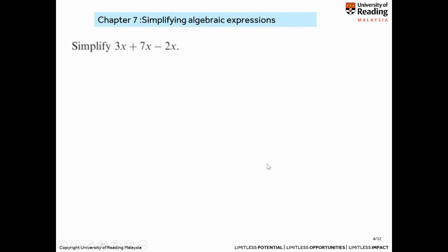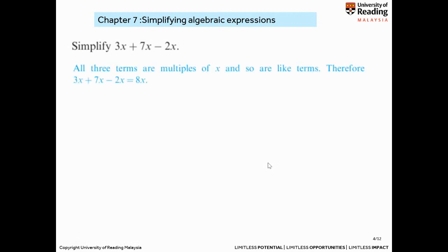Let's look at the first example: 3x plus 7x minus 2x. You notice that these all consist of x, so all the terms are like terms. Therefore you just add the coefficients: 3 plus 7 gives 10, minus 2 gives 8x. So this is quite simple.